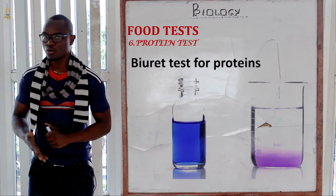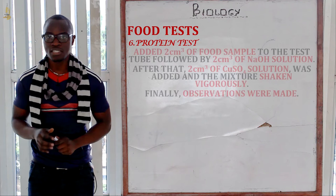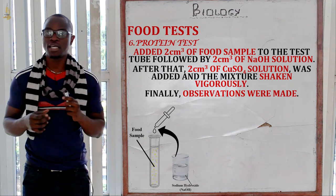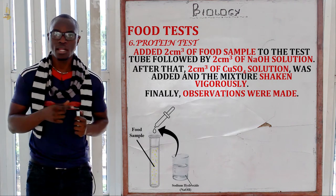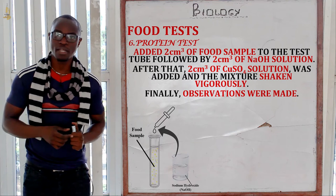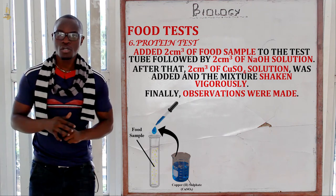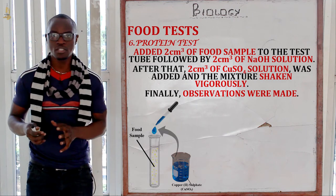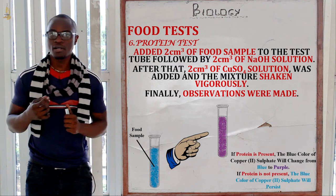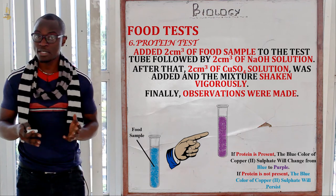Lastly, let's look at the protein test. We have two tests here. The first one is called the Biuret test. In the Biuret test, we take the food sample and place it inside the test tube. Then we add equal amounts of sodium hydroxide, followed by about two centimetres cubed of copper sulfate solution. You can place it in a warm water bath to accelerate the process. If protein is present, the blue colour of the copper sulfate solution will change from blue to purple, indicating the presence of protein.